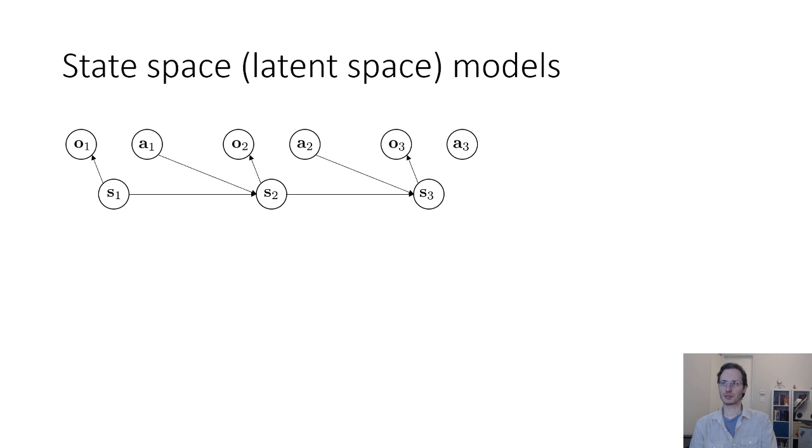So, these are sometimes referred to as latent space or latent state models. In general, they're state space models. So, here we're going to learn two objects. We're going to learn a P of ot given st, basically how does our state map to an image? That's the observation model. And a P of st plus 1 given st at, which is our dynamics model in our unobserved state space.